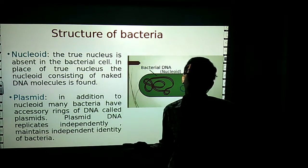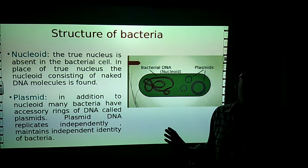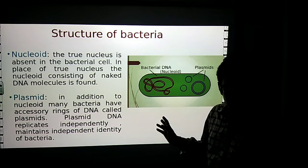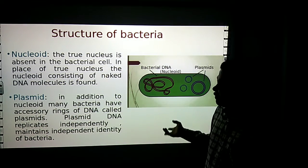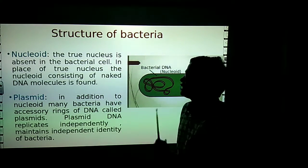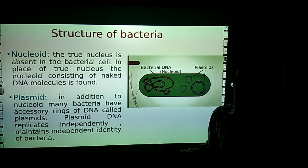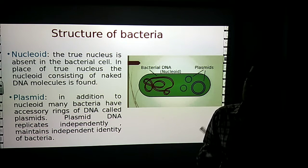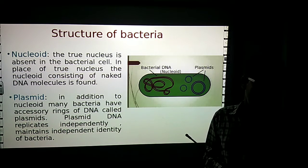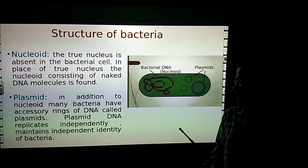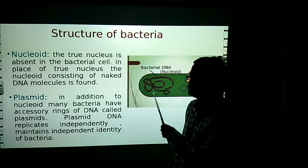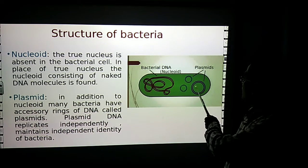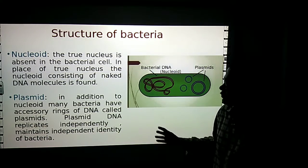Bacteria is a prokaryotic organism — it has no well-defined nucleus. In place of a true nucleus, the nucleoid is present in the bacterial cell. The nucleoid consists of naked DNA molecules. In the place of a nucleus, the nucleoid is found — the bacterial DNA in circular form is called the nucleoid.